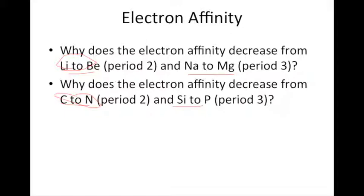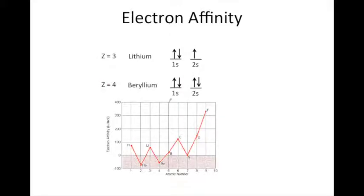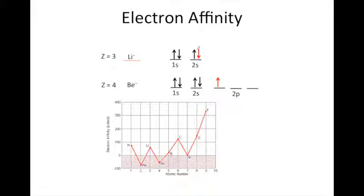Let's explain this by looking at lithium and beryllium — the same explanation can be applied to the other periods. When we add an electron to lithium, we have the lithium anion and that electron goes into the 2s subshell. For beryllium, we have the beryllium anion and the electron added to beryllium goes into a new subshell — the 2p. The electron affinity drops from lithium to beryllium, indicating that it is easier or more likely to add the electron to lithium than to beryllium.